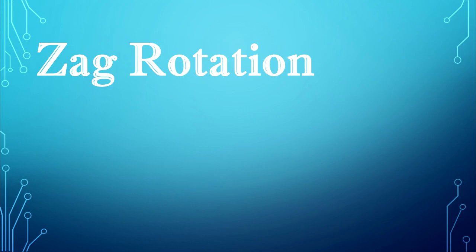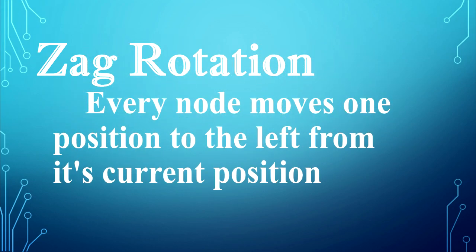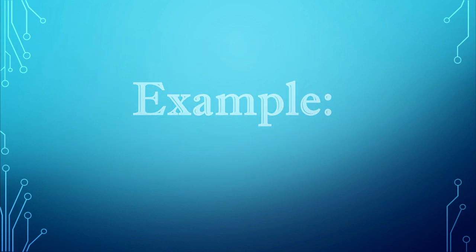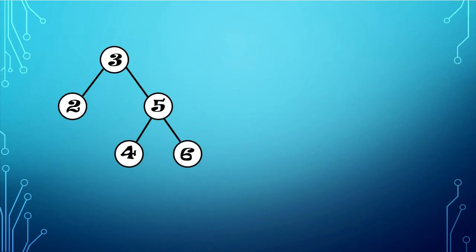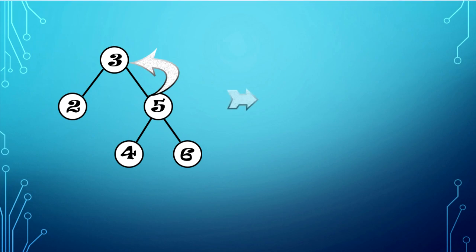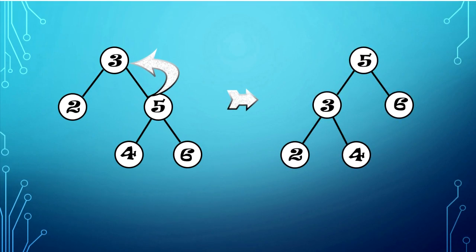Zag rotation. In zag rotation, every node moves one position to the left from its current position. We are going to splay element 5 using zag rotation. The element 5 will be moved once to the left. The result will be: element 5 will be the new root node, and the previous root node, which is element 3, will be the left child of the new root node.